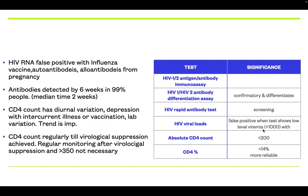Whenever the test shows a low level of viremia, especially less than 1000, the absolute CD4 count is used. Whenever it is less than 200, we suspect AIDS. CD4 percentage, whenever it is less than 14%, is more reliable than absolute CD4 count. HIV RNA can be false positive due to influence of syphilis, autoantibodies, or antibodies from pregnancy, and conditions like SLE and connective tissue disorders. All antibodies can be detected by 6 weeks in 99% of people, and the median time to be positive is 2 weeks.